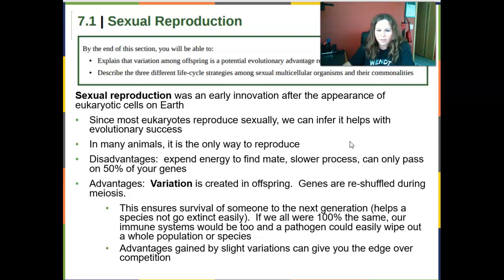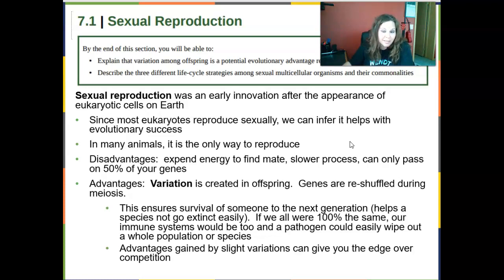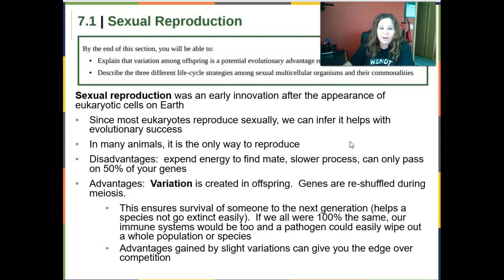There are some disadvantages, though. It takes energy to find a mate. If there aren't many of your type of organism around, you have to seek out a partner, attract them, maybe even fight for them — that expends a lot of energy. And in doing so, you only get to give about 50% of your genes to your offspring. Whereas in asexual reproduction, you give 100% of your genes, and it's really fast without the energy cost of finding a partner.